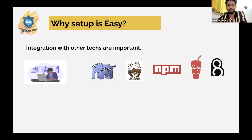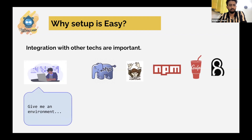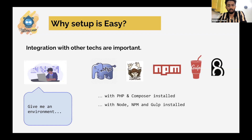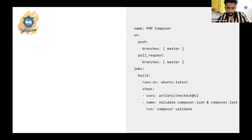Integration with other technologies is very important when working with an application. As a developer on any Drupal application you'll need PHP, Composer, npm, Gulp, Behat, Selenium or a Chrome browser. Instead of installing these on the CI/CD environment each time a build runs, you can simply say: give me an environment where PHP and Composer are installed, Node and npm and Gulp are installed with the versions I specify, and I'll build my application in that environment. For deployment, you simply connect to the target and deploy your code.